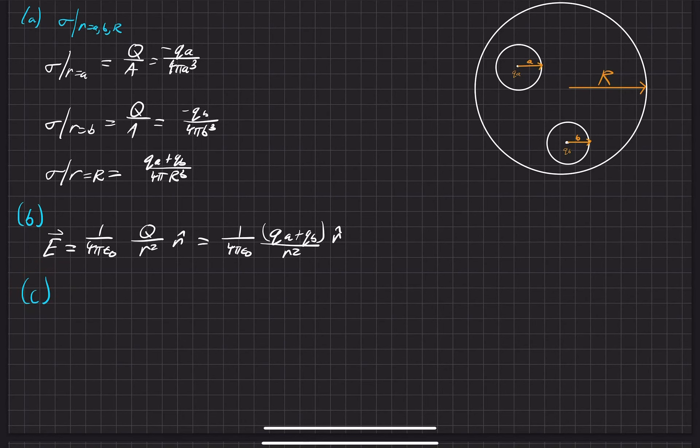All right, for part C of the problem, our goal is to find the electric field within these two cavities. So we'll start off with the cavity, this A cavity right here.